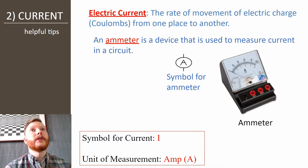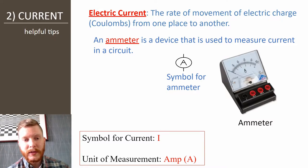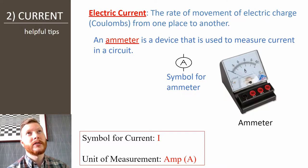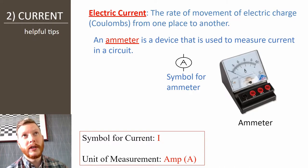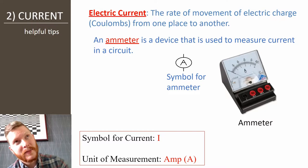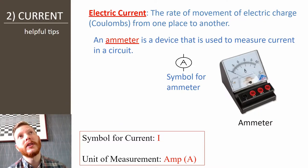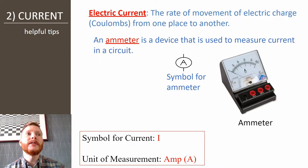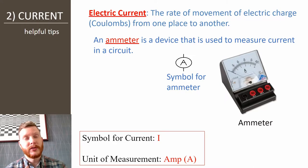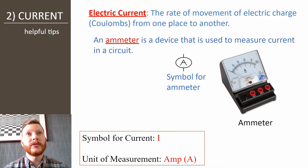Then we have current. Current describes how many electrons are moving. Current is the rate of movement of electric charge from one place to another — it's coulombs per second. It tells you how many of those groups are moving through your circuit every second. We're going to use an ammeter to measure this. Current is just how many coulombs per second.